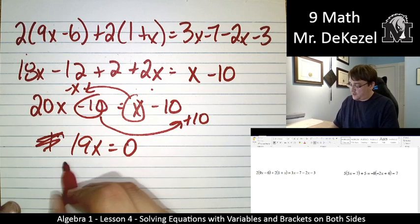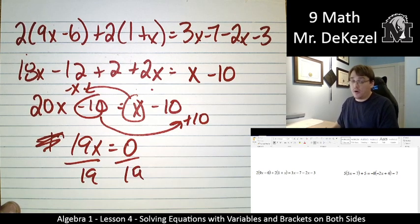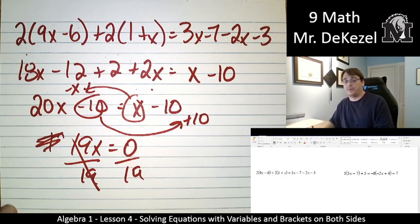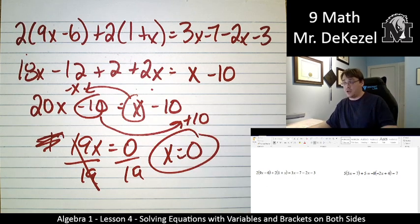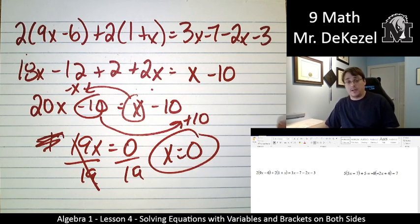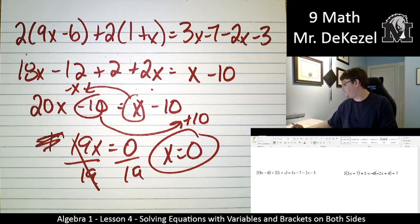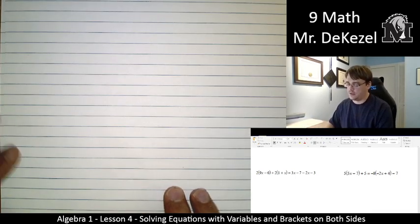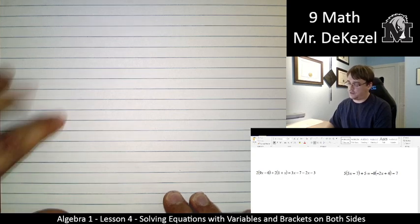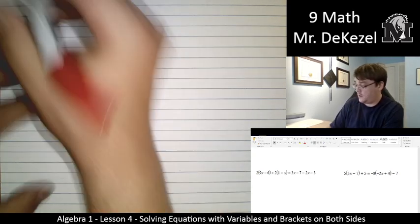So if we make our fraction, 0 over 19, the answer is 0 whenever we have 0 on top. So I didn't plan this. It looks like we have another answer of 0. At least now you're familiar with that. Fraction with 0 on top is 0.